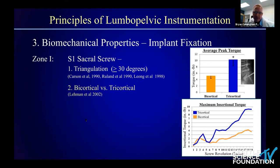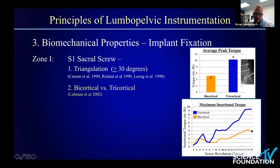A study by Dr. Lebron Lehman looked at maximal insertional torque comparing bicortical versus tricortical fixation. The average peak torque on insertion is about two-fold if you employ a tricortical technique versus bicortical. Using a torque meter as a function of screw revolution, he found that at about the sixth turn — with a trajectory originating on the posterior aspect of S1 — there was a significant increase in insertional torque continuing all the way through purchase of the sacral promontory. Tricortical fixation, if clinically available at S1, is biomechanically advantageous.